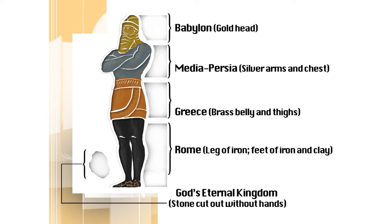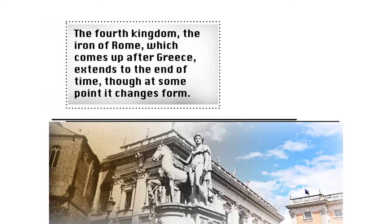Points to remember so far: Babylon, Medo-Persia, Greece, Rome, God's final kingdom. This sequence forms the prophetic outline for all the rest of what we're going to study. All the other prophecies are basically going to be based on this broad, firm, and immutable foundation. Second point — don't forget this, it's crucial: the fourth kingdom, the iron of Rome, which comes up after Greece, extends to the end of time, though at some point it changes form. If you need to stop this seminar right now and go over this material in Daniel 2, do it. Learn this sequence — see how Rome goes all the way to the end — learn it so well you could teach it to others. You won't be sorry. Anyway, that's Daniel 2.